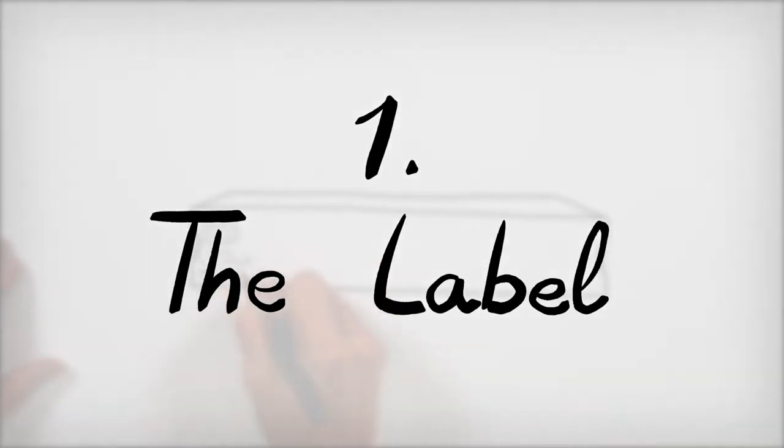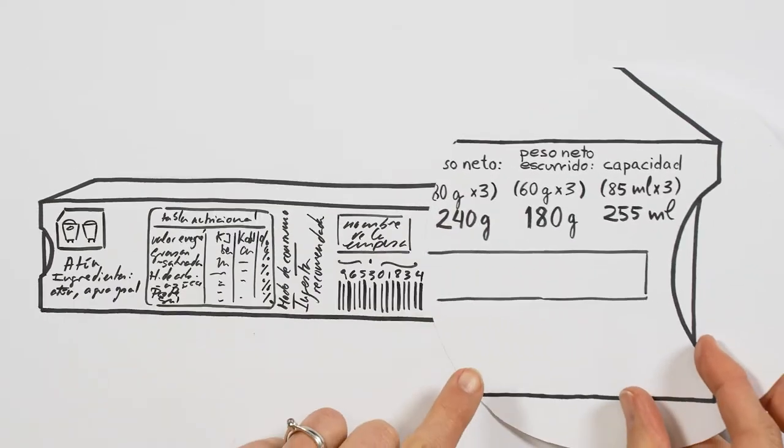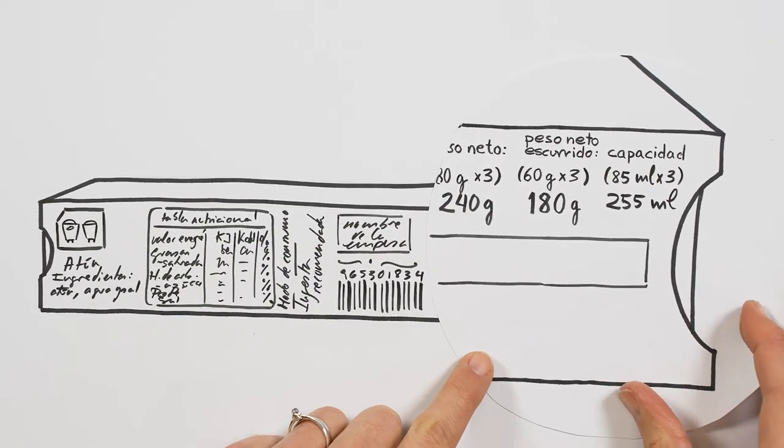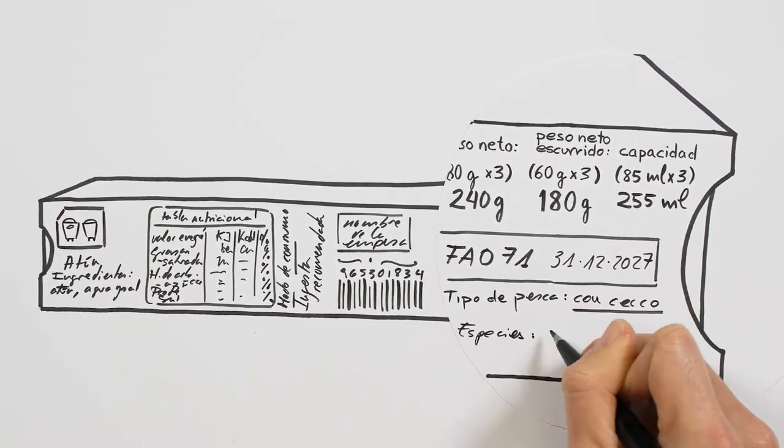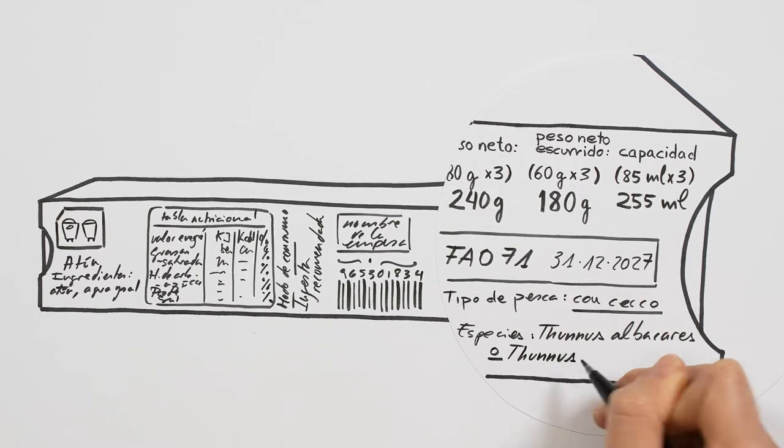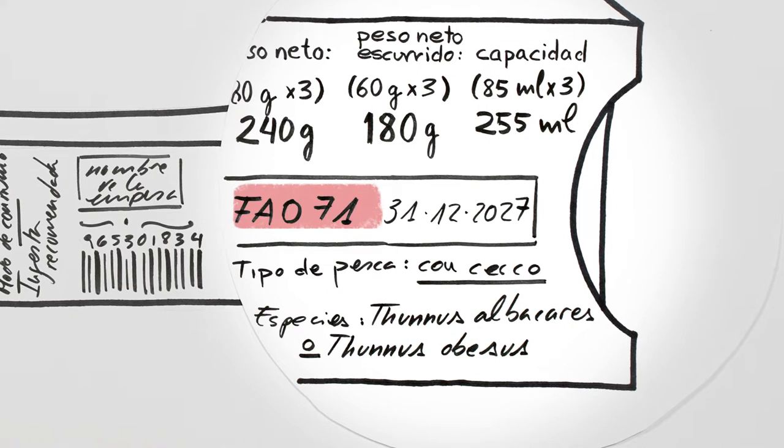We've divided the journey into six parts. Let's have a look at the first one. If you look at what a label tells you, in addition to the usual things, you'll see that some companies also give information on the species, the area where it was caught, or the fishing gear they used. But this information isn't regulated. It's optional, so you won't always see it or know how to interpret it.